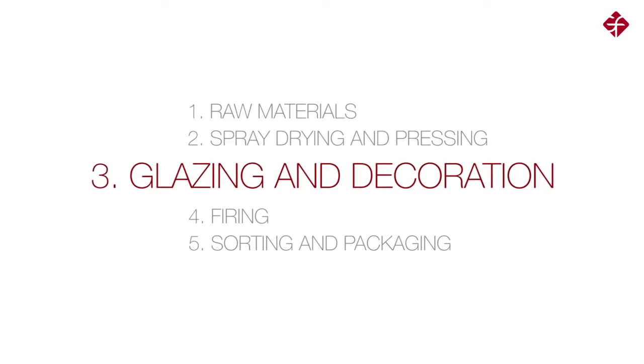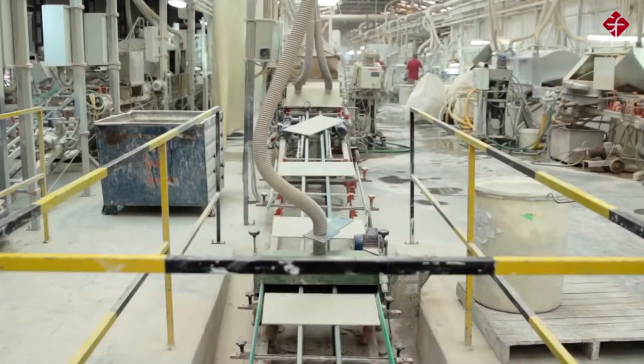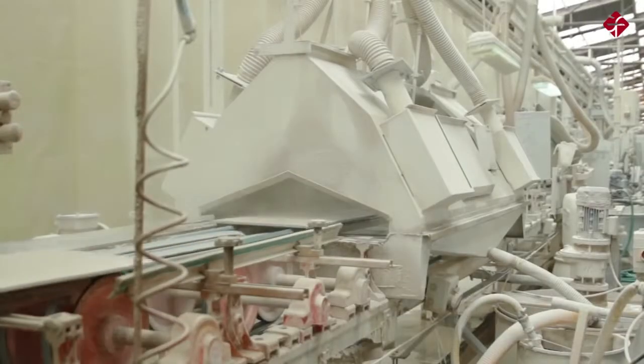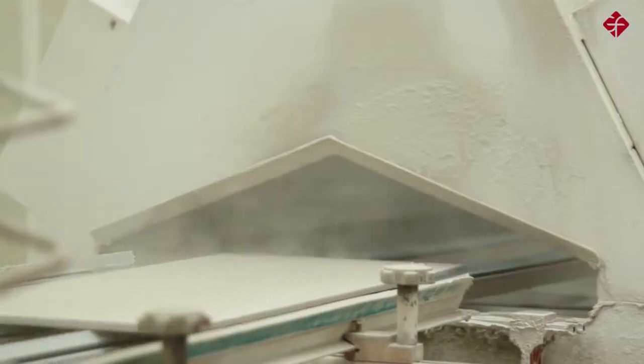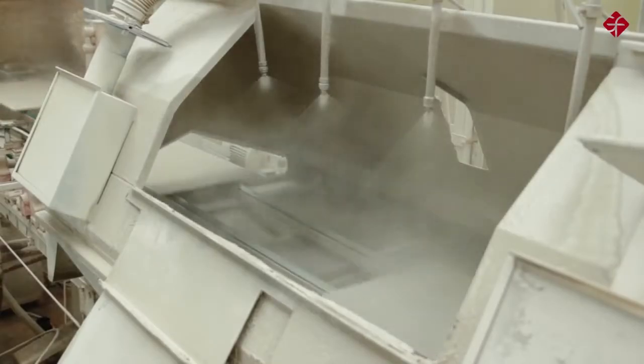Glazing and decoration. The tiles go directly to the glazing line, where several coats of slip and glaze are applied. The englobe is an interface material that lays between the clay base and the glaze that is to be applied to it. One layer of glaze is applied on top of the englobe to provide a base for the decoration.